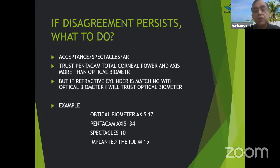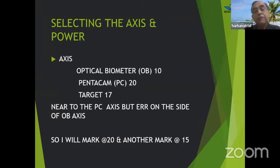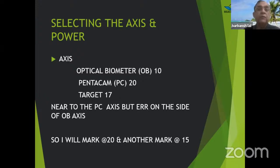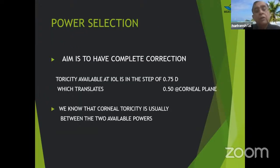For example, if the optical biometer axis is 17 degrees and Pentacam is 30 degrees, but the patient's spectacles acceptance is at 10 degrees — I implanted the IOL at 15 degrees. When selecting axis and power, if optical biometer gives 10 and Pentacam gives 20, I trust Pentacam more but err on the side of the optical biometer — marking at 20, not 15. Always err slightly toward the measurement you trust more to avoid going beyond the target.